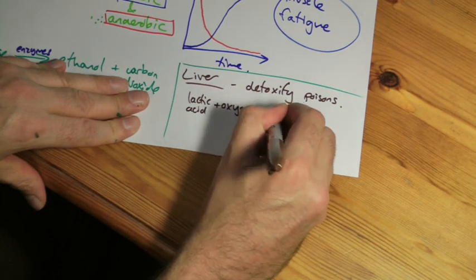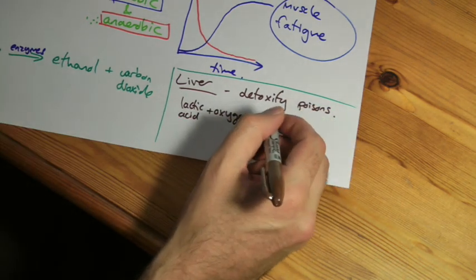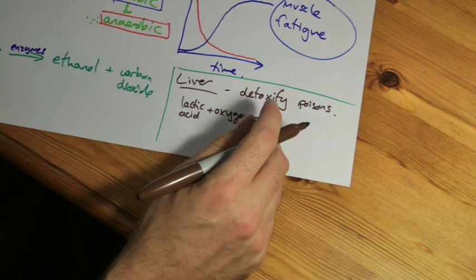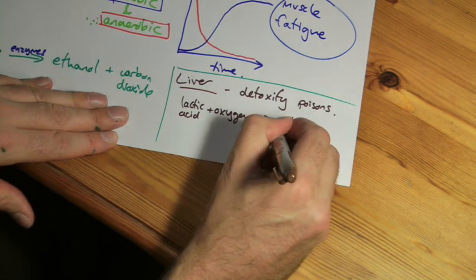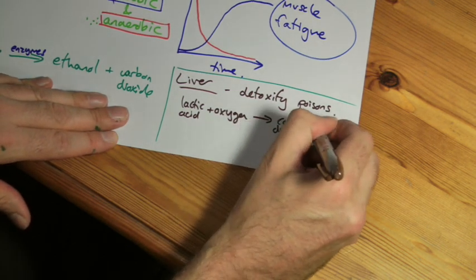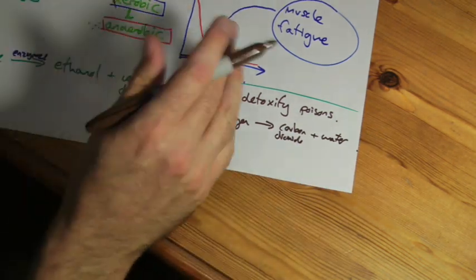So we're going to put this as a formula, lactic acid. And then the oxygen is used, and this will be occurring in the liver cells, and it's broken down into carbon dioxide and water to harmless substances. In fact, some of it can be turned back into glucose, but we're not going to worry about that.